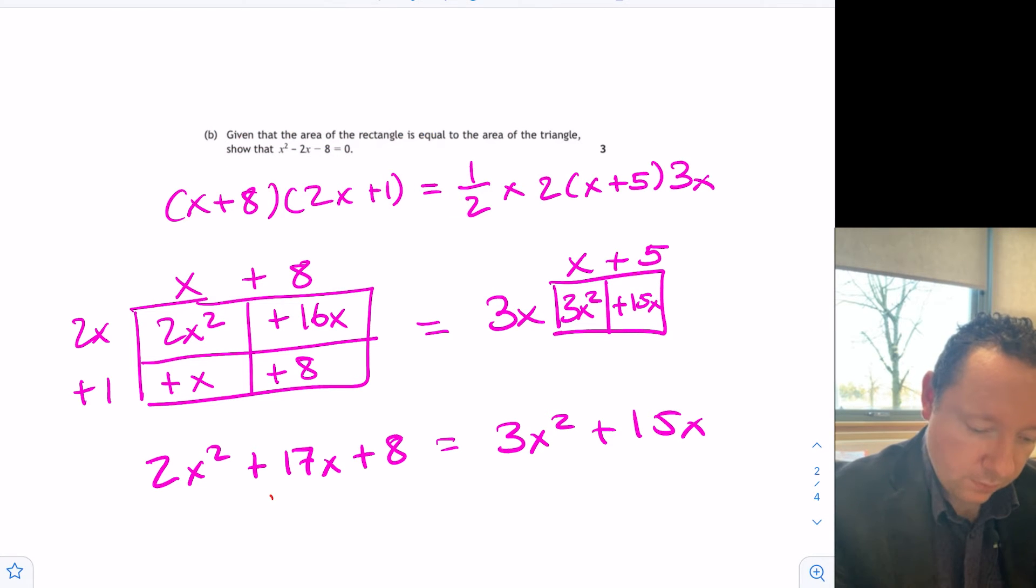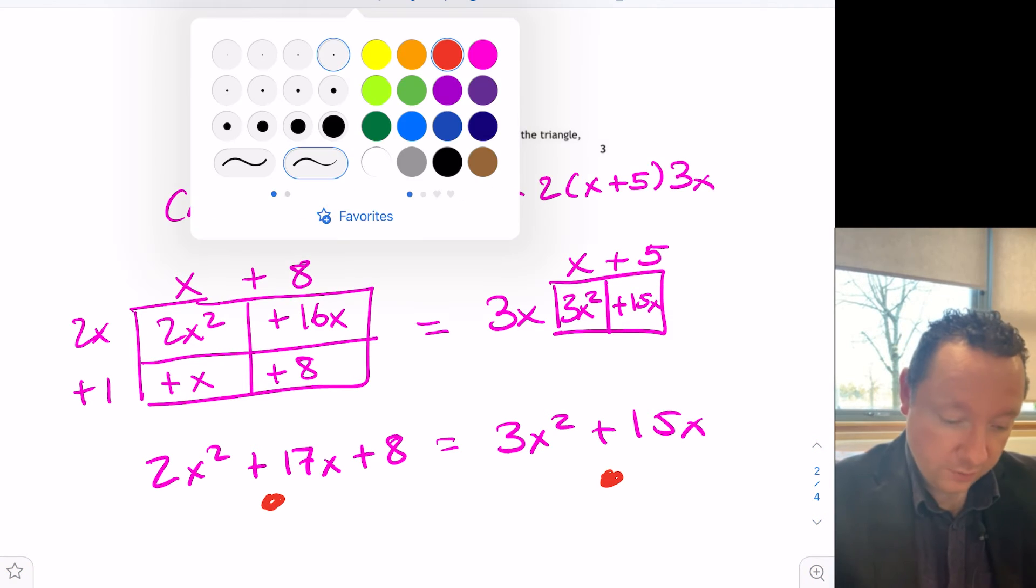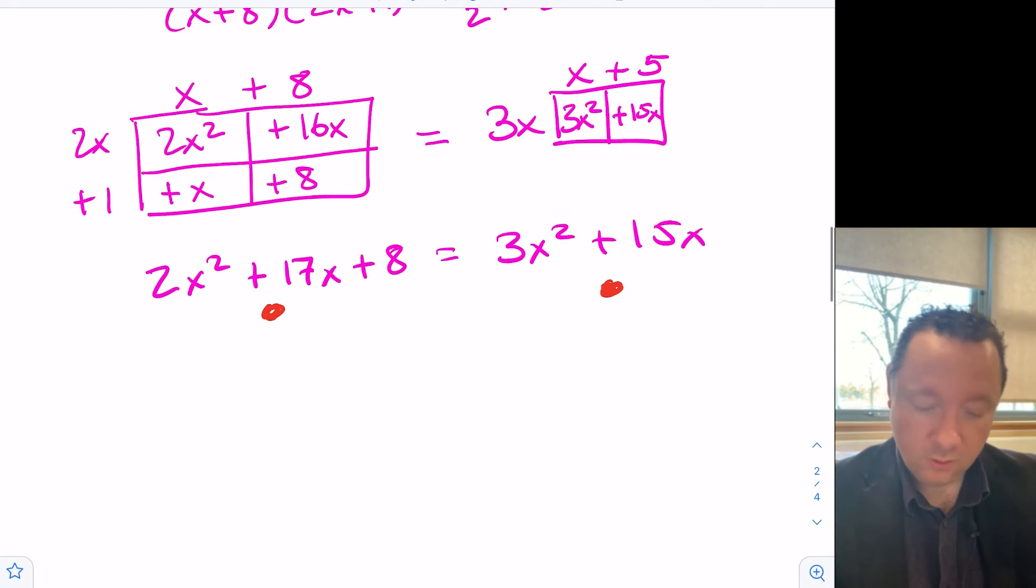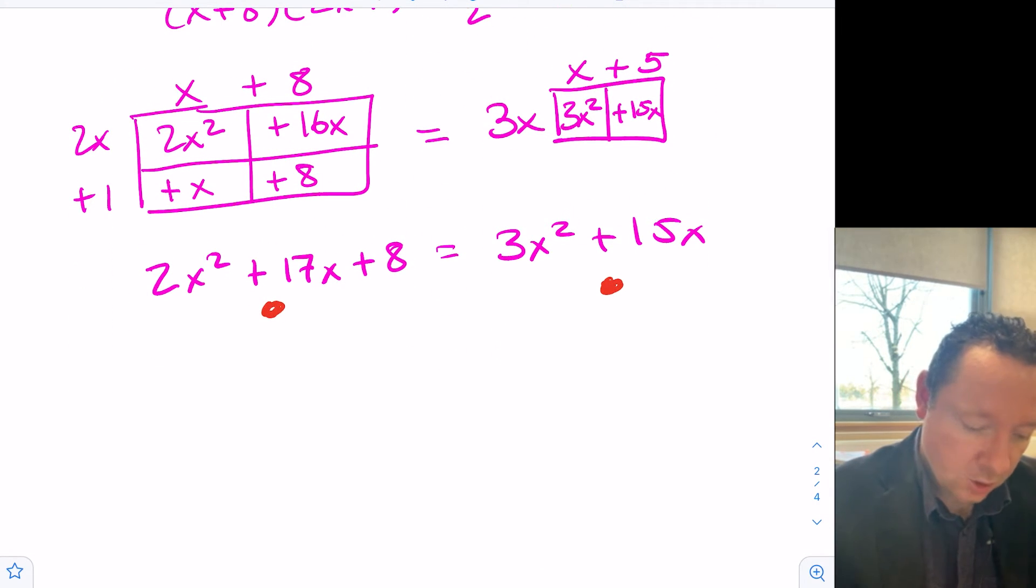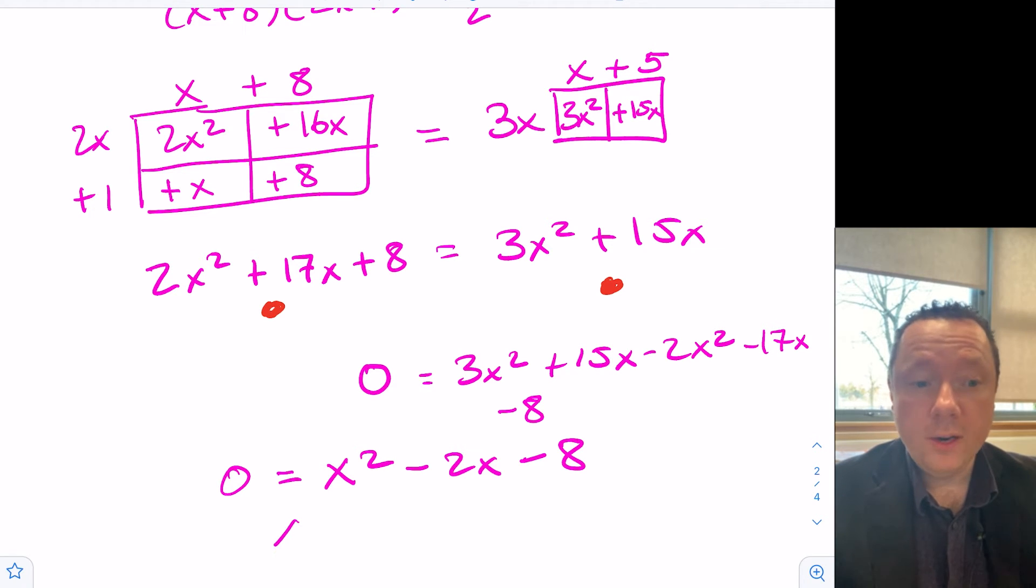And that equals the right-hand side of 3x squared plus 15x. You would get a mark for expanding this bracket and a mark for expanding that bracket. And then a mark for making them equal to each other and then somehow getting it down to the expression that they want. Now, the expression they want is equal to 0, so I need to move everything over to the same side. So I've got small 2x squared. So if I look at the right-hand side, I've got 3x squared plus 15x. I'm going to make this 0, I'm going to take away 2x squared then. I'm going to take away 17x. And I'm going to take away 8. So 0 equals 3x squared minus 2x squared, which is x squared. 15x minus 17x is minus 2x. And I've got minus 8. Or to put it in the way they want, x squared minus 2x minus 8 equals 0.